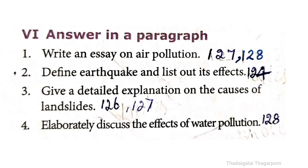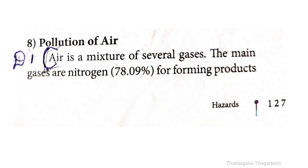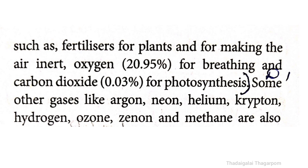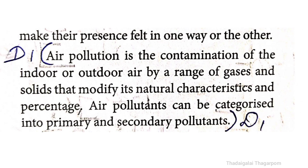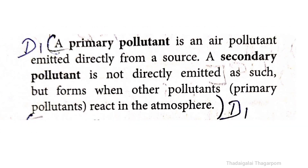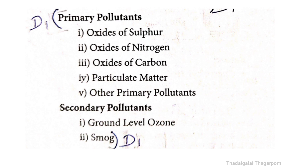Next, Roman No. 6: Answer in a paragraph. First question: Write an essay on air pollution. The answer is on page 127. Air is a mixture of several gases. Air pollution is the contamination of the indoor or outdoor environment. Primary pollutants react in the atmosphere to form secondary pollutants.